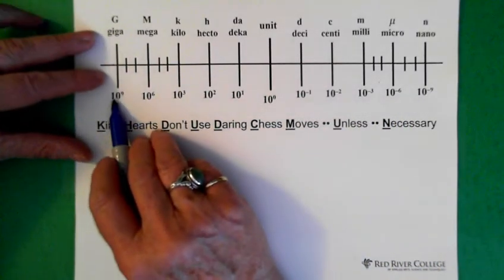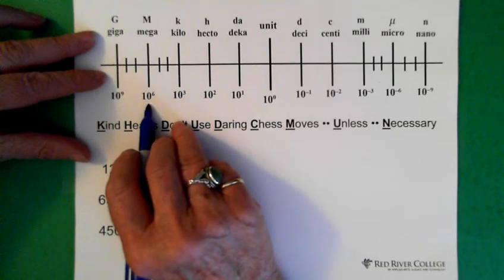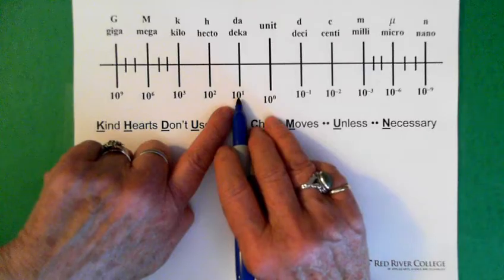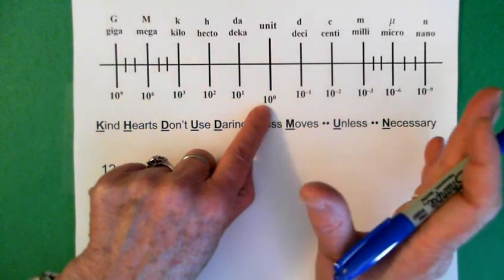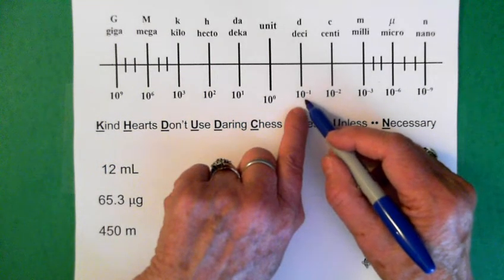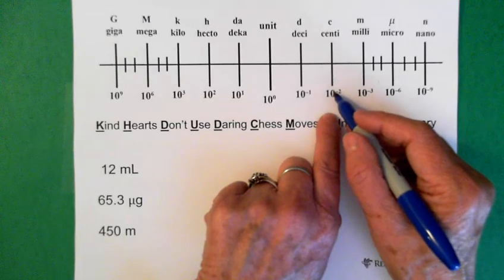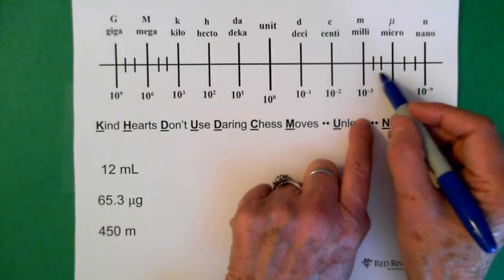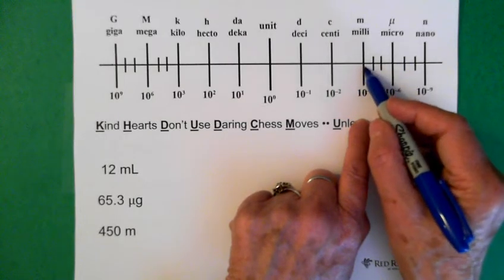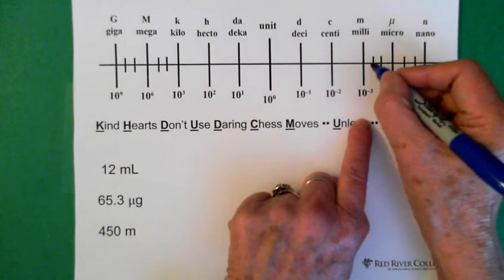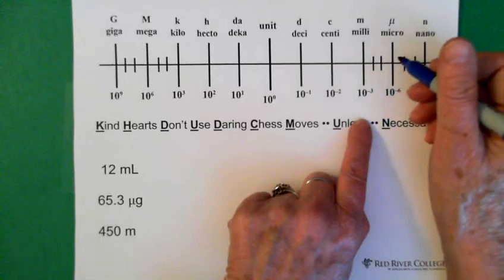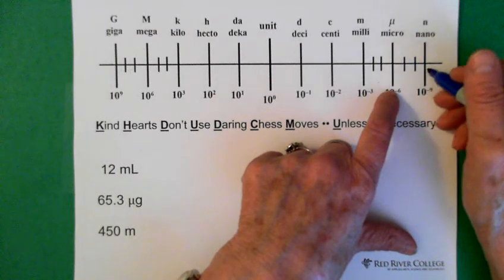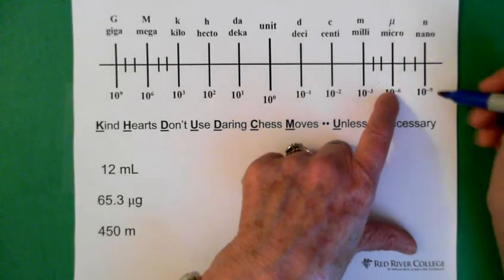Giga is 10 to the 9. Mega is 10 to the 6. Kilo is 10 to the 3. Hecto is 10 to the power of 2. Deca is just 10. Our basic unit is 10 to the power of 0, which is 1. Deci is 10 to the minus 1, which is 1 over 10. Centi is 1 over 100. Milli is 1 over 1,000. Notice there are two dots — from milli to micro we're dividing by 1,000, stepping through divide by 10 three times. And then from micro to nano, we're dividing by 10 three times again, down to 10 to the minus 9.